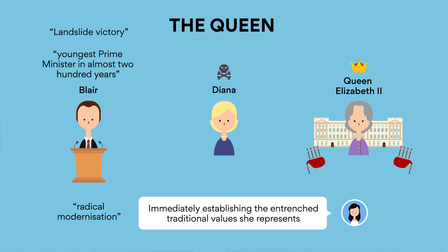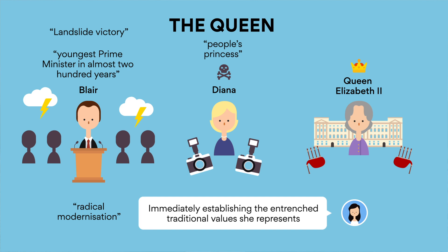Princess Diana's sudden death at the hands of relentless paparazzi results in turmoil in both the lives of those in the monarchy and adoring British citizens who mourn for the loss of the people's princess. As days ensue with no public response from the royal family, the British people grow in disdain towards the authority, demanding a more empathetic response. Caught in between the people and the monarchy is Blair, who sees the royal family's public image suffer as a result of inaction.